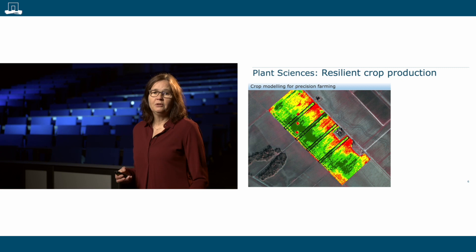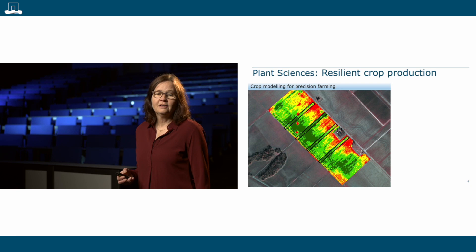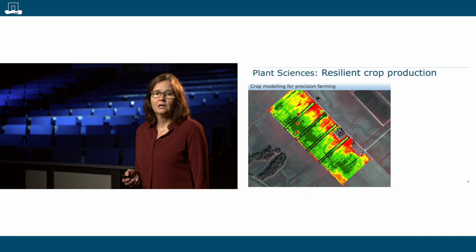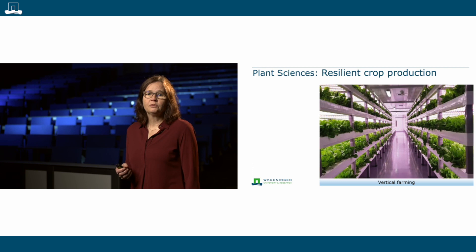For example, in this field you can see red areas and green areas. The green areas are moving towards sufficient yields, but the red areas are missing something. Through the models and the precision farming, you can supply specifically the red areas with water or nutrients that are required to optimize the yield.